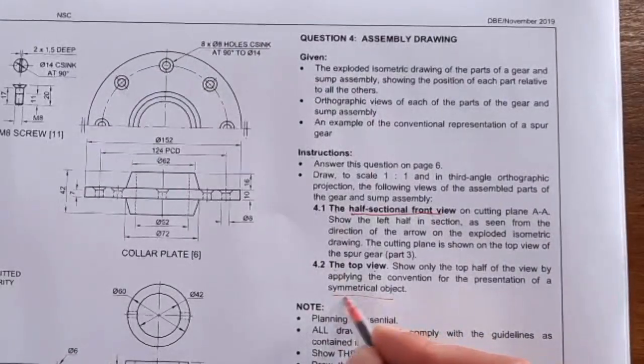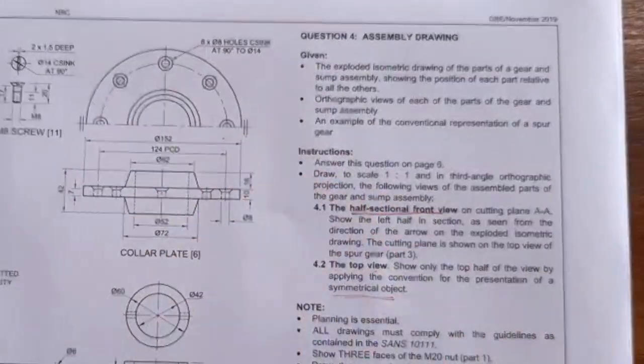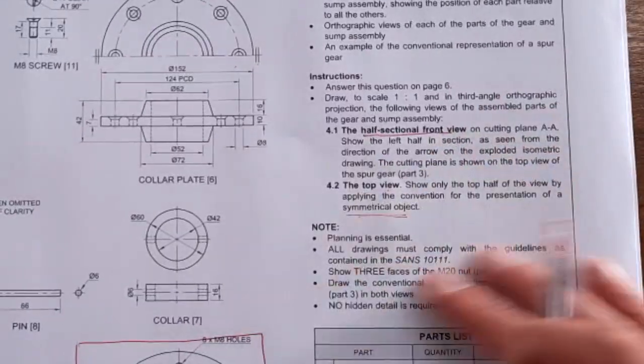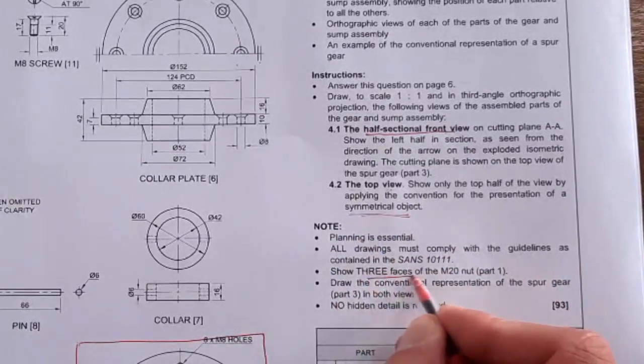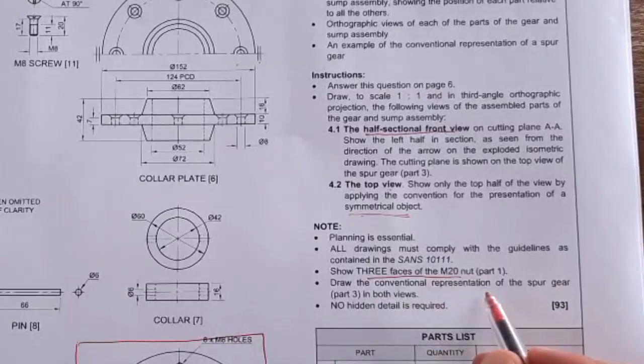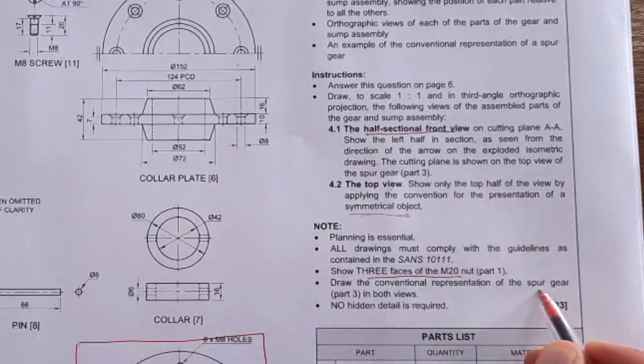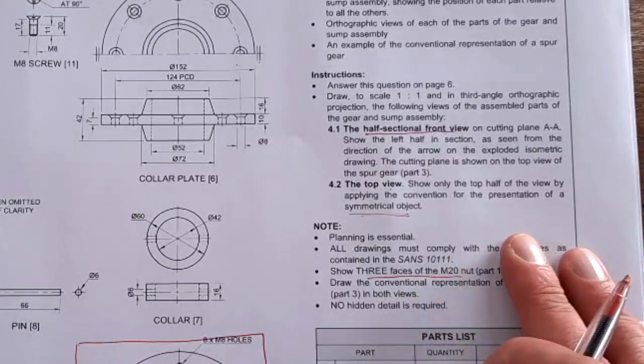If we talk about a half sectional front view and the top view, the layout is going to be similar to this - we have our half sectional front view and the top view. It's this top view that must be drawn in symmetry. Then you're going to plan your drawings and look at some of these notes: they want to see all three faces of the M20 nut, they want conventional representation of the spur gear.